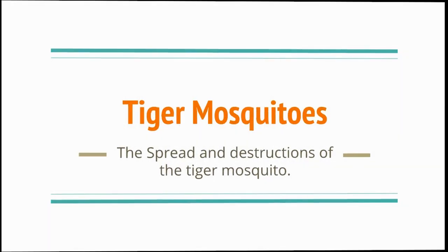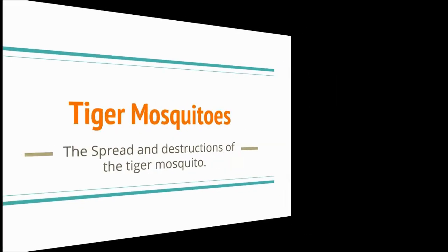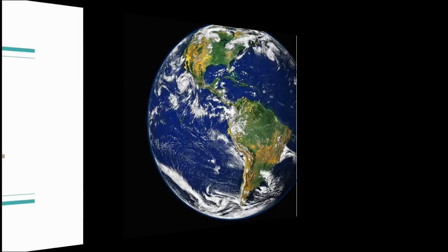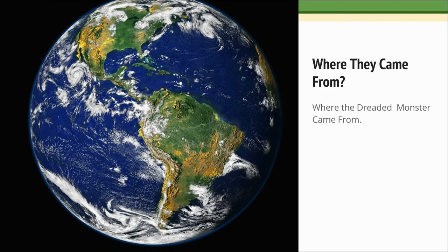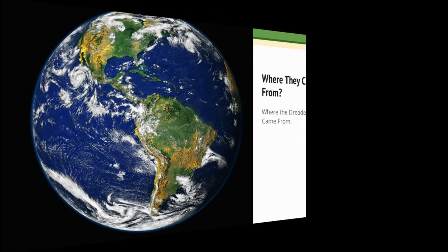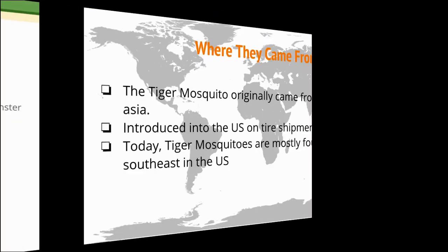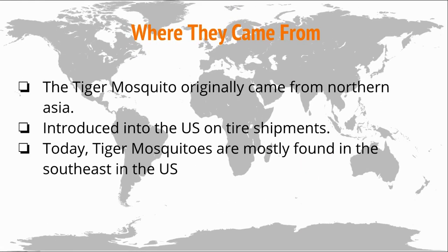Tiger Mosquitoes — where they came from. The Tiger Mosquito originally came from Northern Asia and was introduced in the U.S. on tire shipments.